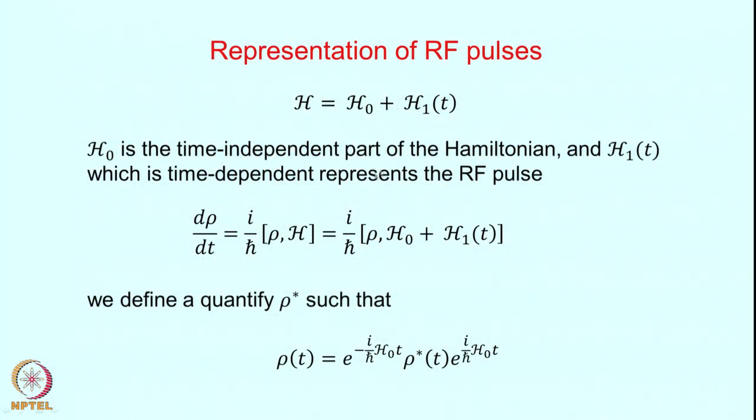The take-home message is: when you measure the x or y component of the magnetization, you will only collect the single quantum coherences — not the zero quantum coherences, double quantum coherences, or populations. Now let us see how the various conditions of the density operator are created. Obviously one has to apply perturbations, and in a multipulse experiment we have many RF pulses. We must know how to calculate the effect of the pulses on the density operator.